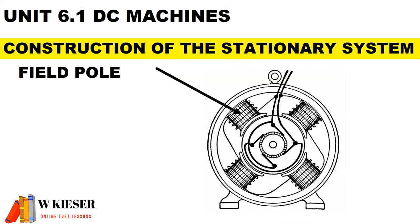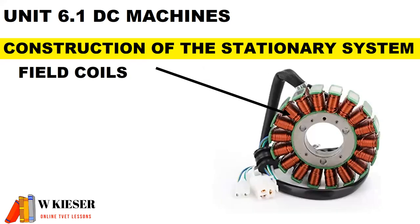The field pole — the main function of the field pole is to strengthen the magnetic field and it also helps to hold the field windings in place. The field coils, also known as the field windings, are part of the stationary field system, and the main function of the field coils is to produce a magnetic field when they carry current.